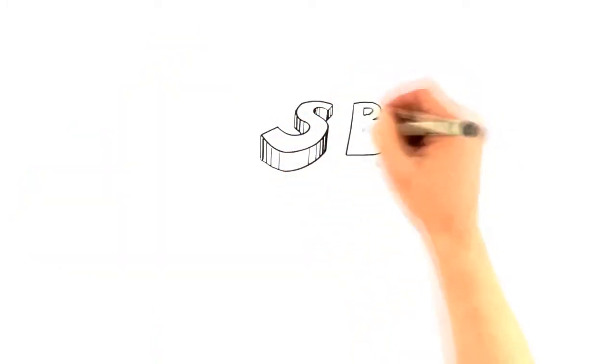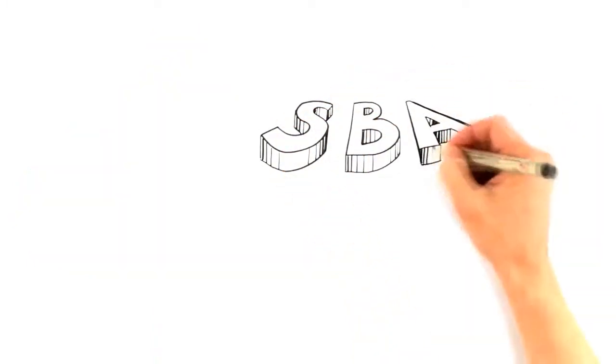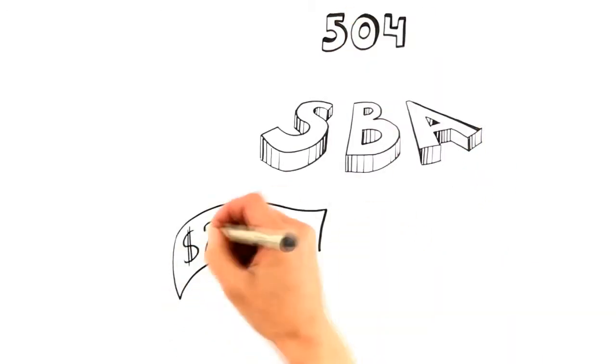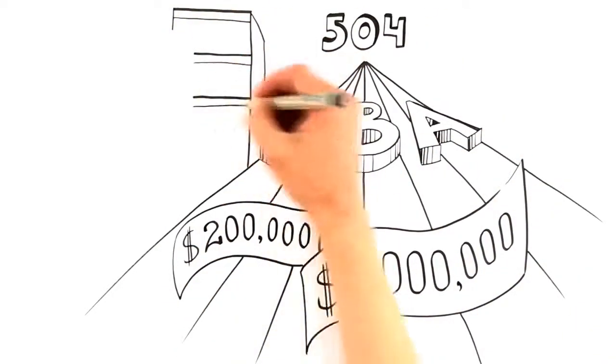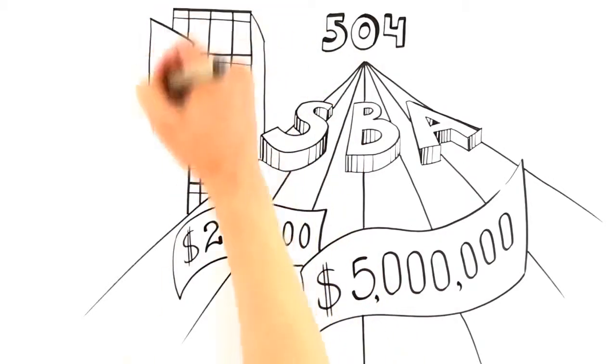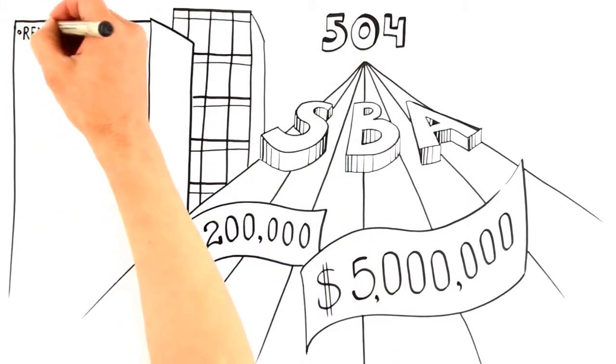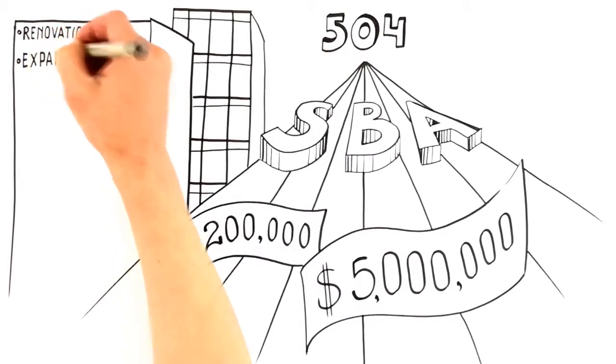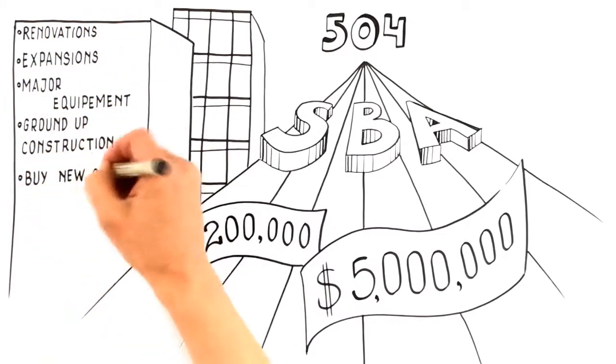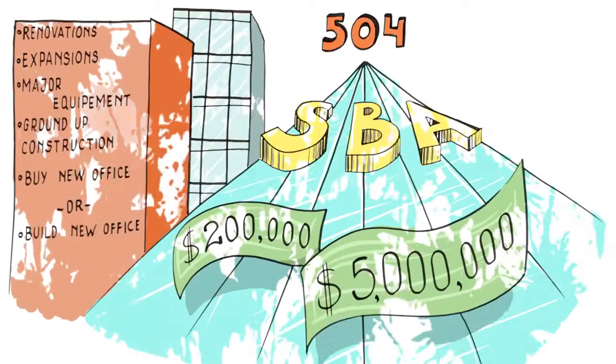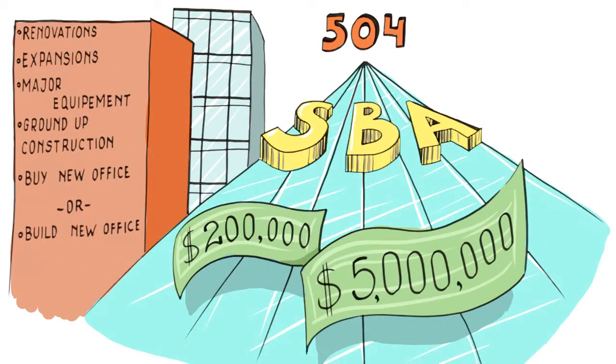Through the SBA 504 program, you can be approved for between $200,000 and $5 million in SBA funding. You can obtain money to purchase real estate for an owner-occupied business. You can also obtain funding for renovations, expansion, major equipment, and even ground-up construction, so you can get the money you need to buy your new office or even build a new office for your company.